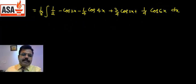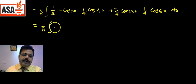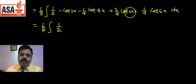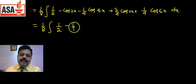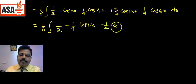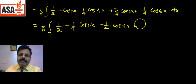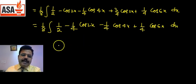Now integrate term by term: ∫[1/2 − (1/4)cos2x − (1/4)cos4x + (1/4)cos6x] dx। Integration of cos2x = sin2x/2, cos4x = sin4x/4, cos6x = sin6x/6।